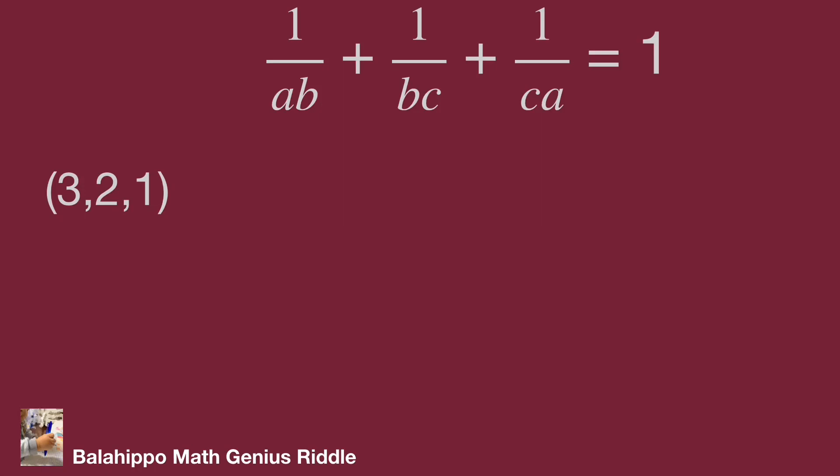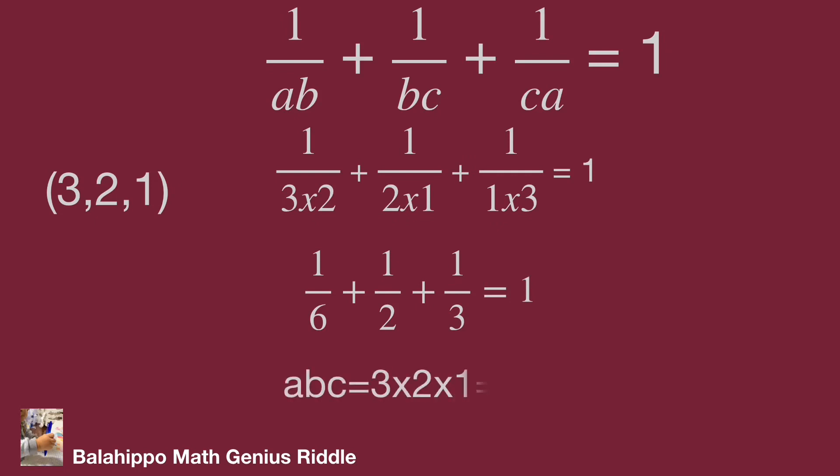Then we get 1 over 6 plus 1 over 2 plus 1 over 3 equals 1. That's correct. So A times B times C equals 3 times 2 times 1 equals 6. That's the answer.